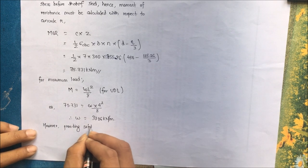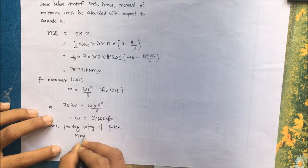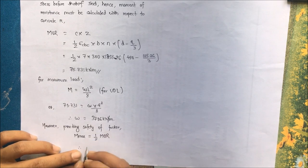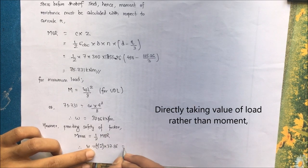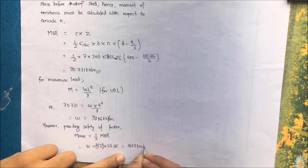However, providing safety factor, that is partial safety factor, M max is equal to 1 by 2 into moment of resistance, 1 by 2 into 37.86, 18.93 kilonewton per meter. So this is the maximum load acting, that's the maximum load.